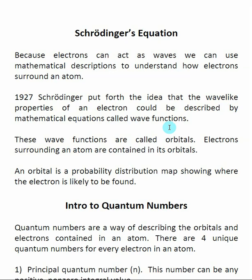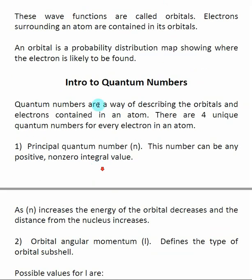Schrödinger's equation has put forth wave functions — a description of the probability of where electrons lie around an atom. They produce the predicted shape of where electrons lie, which allows us to understand bonding around a particular atom. These quantum numbers are used to describe the electrons around an atom. A quantum number is like a zip code for an electron — for every electron inside of an atom, there are four unique quantum numbers.